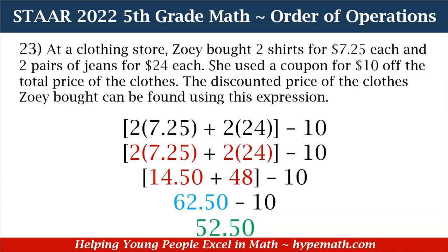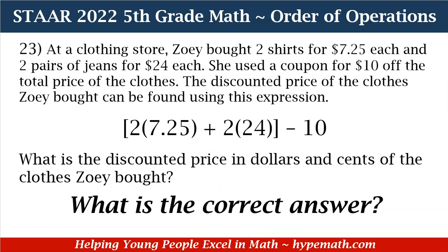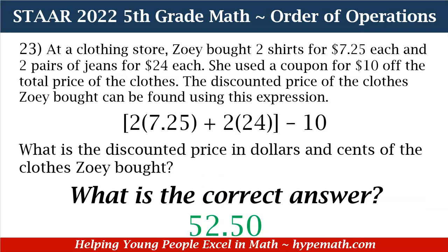$62.50 minus $10 is equal to $52.50. So what is our correct answer? Our correct answer is $52.50.